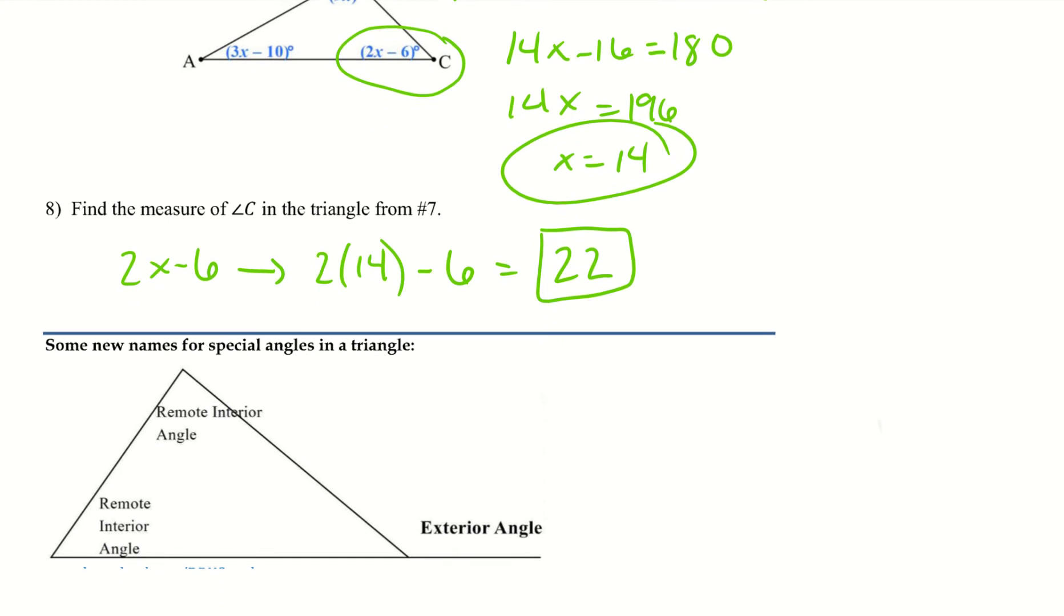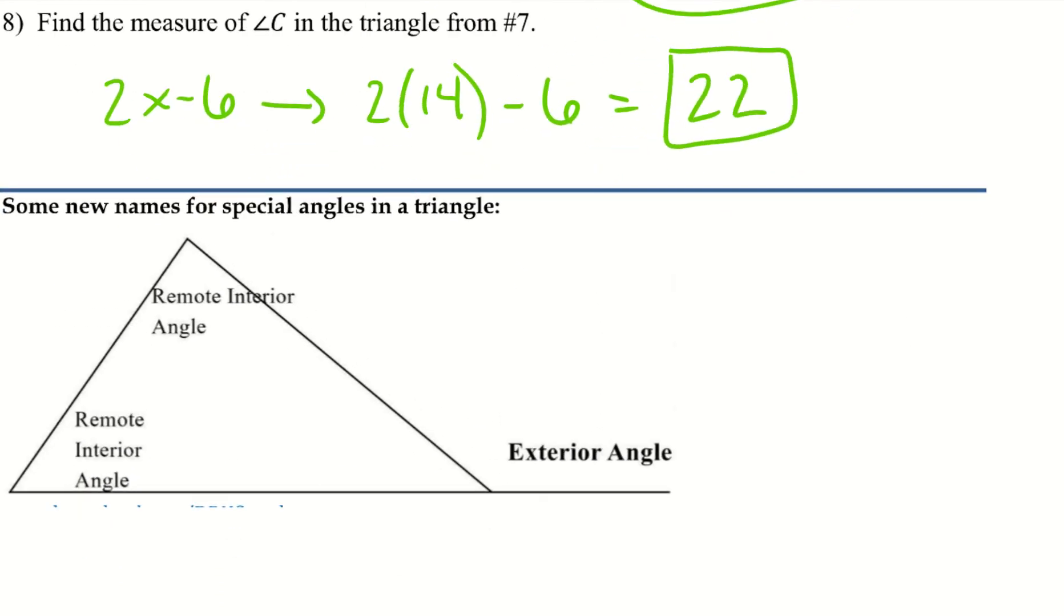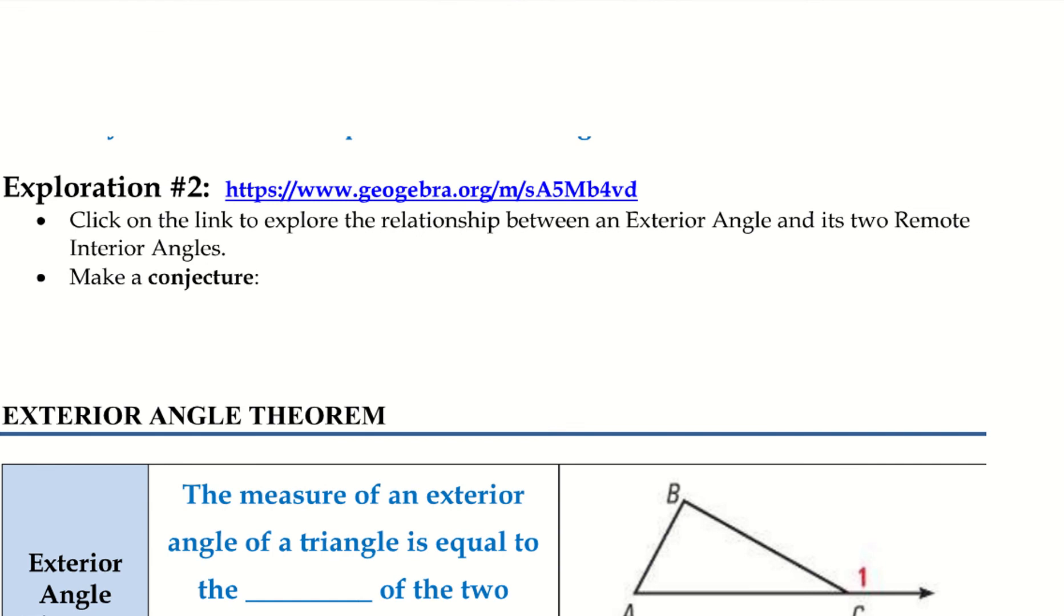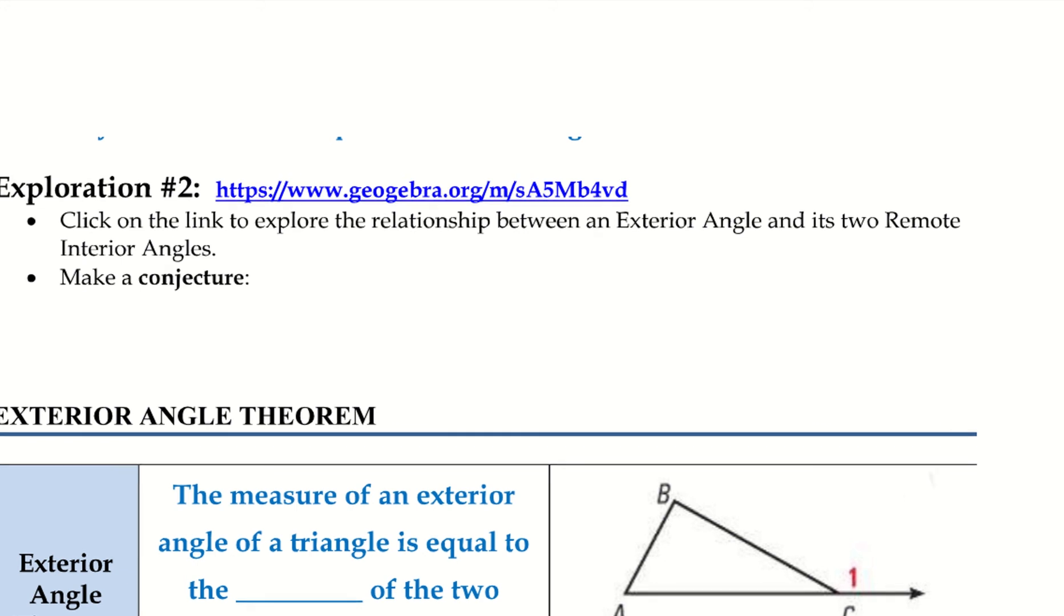Alright, let's take a look at some new vocabulary. So we have this little extra line here outside of our triangle. So this is called the exterior angle. And then we have two remote interior angles. They aren't necessarily equal to one another, but those are our remote interior angles. And then we have our exterior angle. Let's learn a little bit more about those. So go ahead and try this exploration. I'll give you a second to pause the video and try it out.